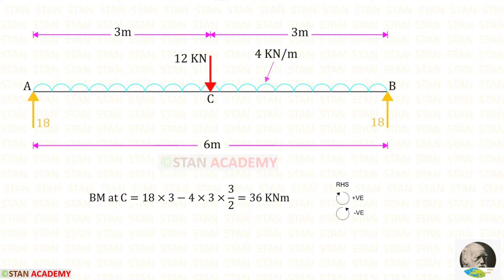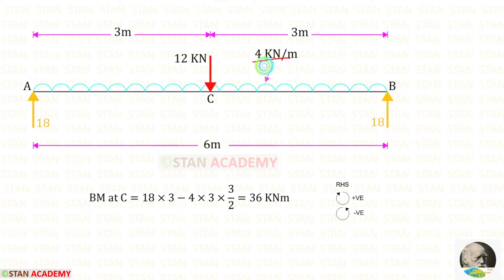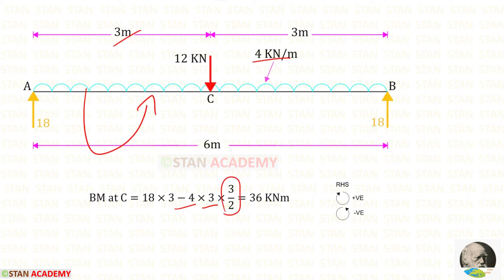Now let us find the bending moment at point C, the center, taking moments from point A moving towards the right. Clockwise is positive and anticlockwise is negative. RA acts clockwise over distance 3, giving +18×3. The UDL acts anticlockwise: −4×3×(3/2) = −18. Finally we get 36 kilonewton meter.